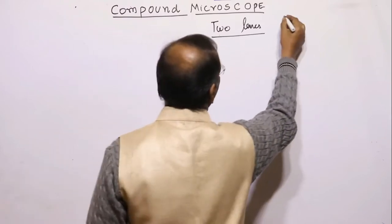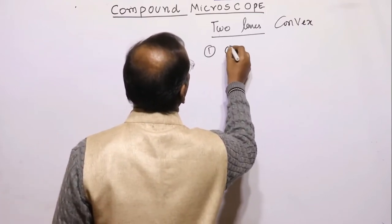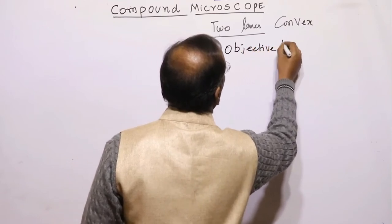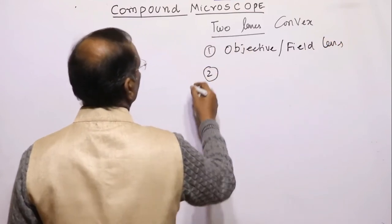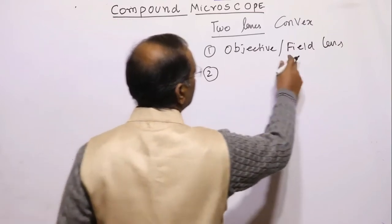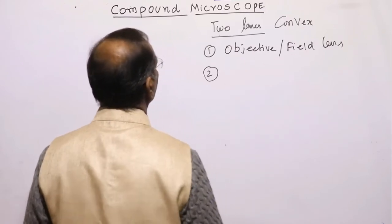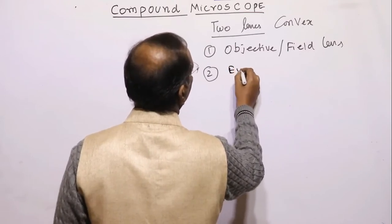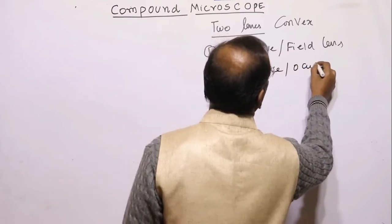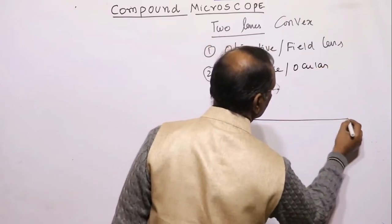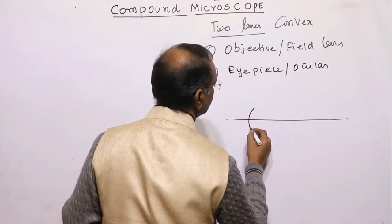Both lenses are convex lenses. The first lens is called the objective, or field lens. The second one is called the eyepiece, or ocular. The objective lens faces the object, while the eyepiece faces the eye. Both lenses are coaxially placed, meaning both principal axes are the same.